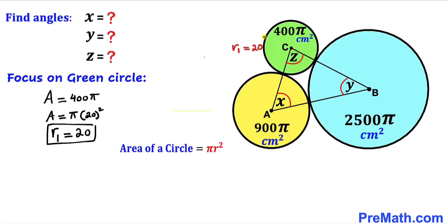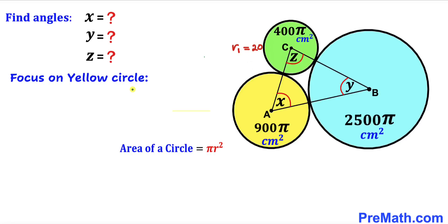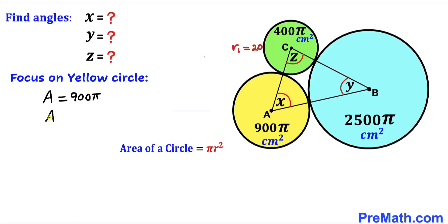Now let's focus on the yellow circle whose area is 900π. We can write 900π = π × 30², since 900 = 30². Therefore the radius r2 of the yellow circle is 30 centimeters.